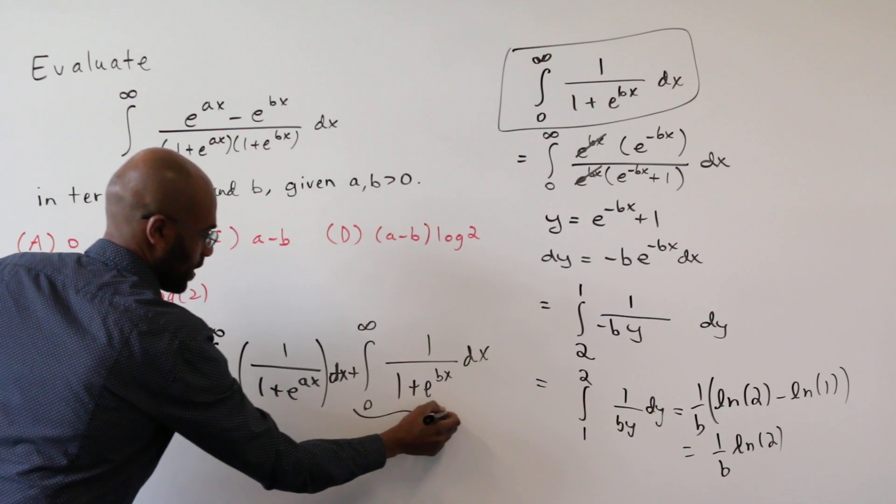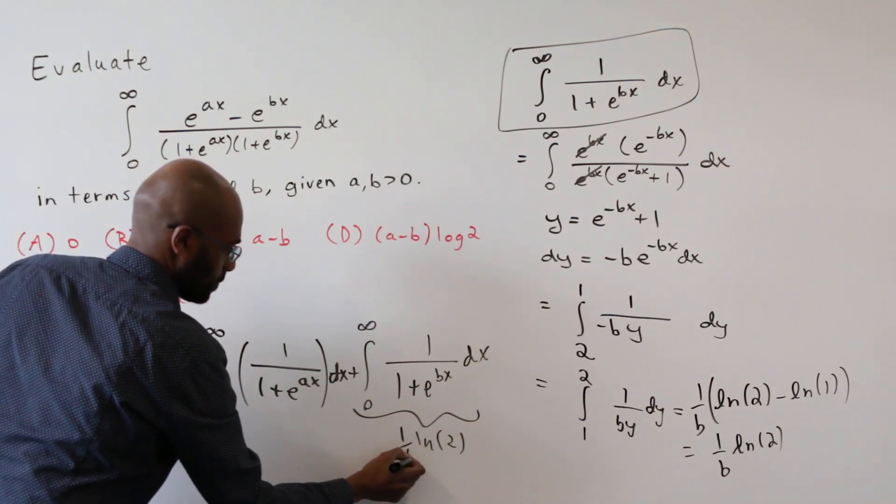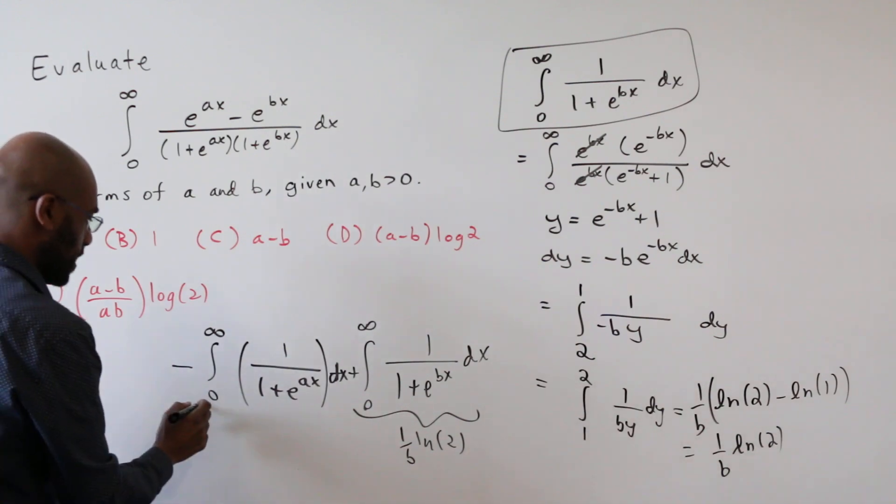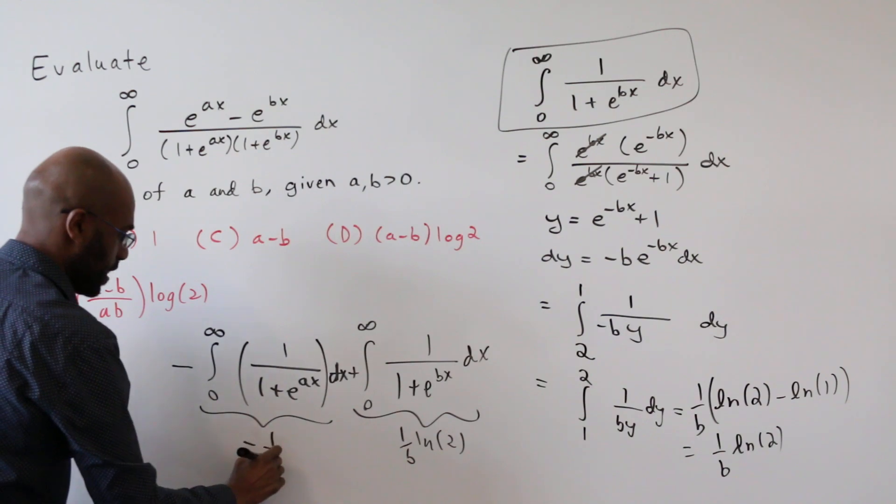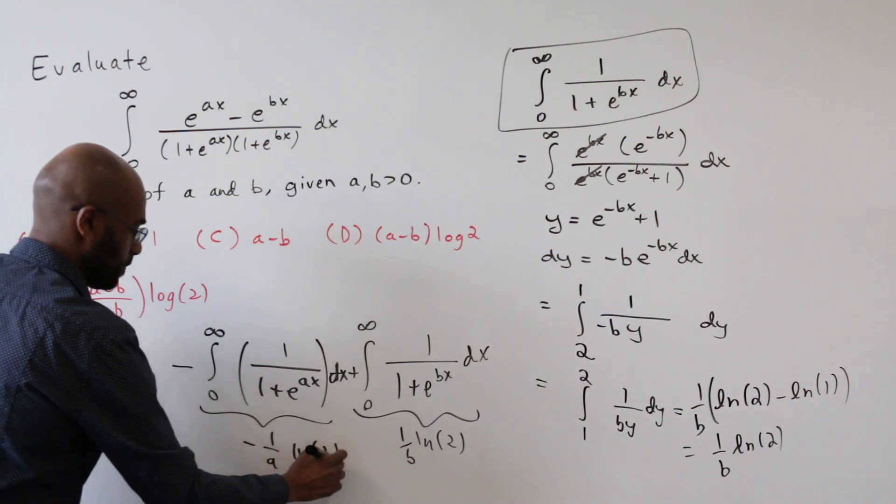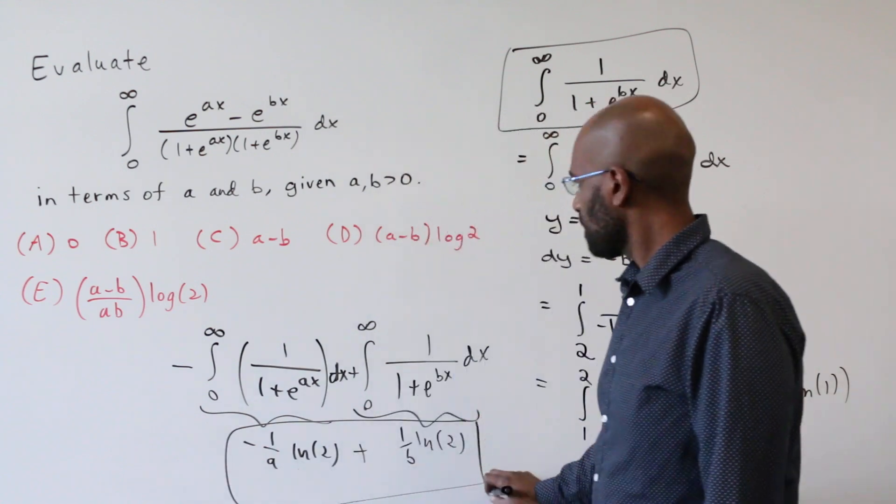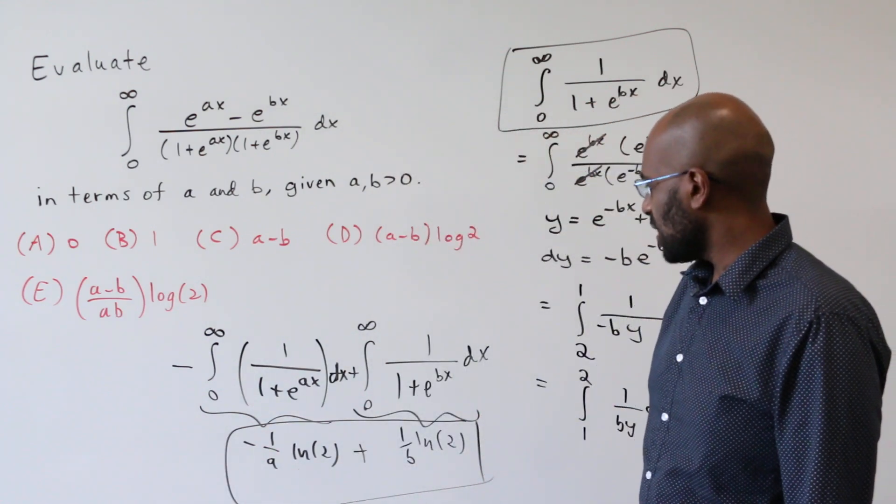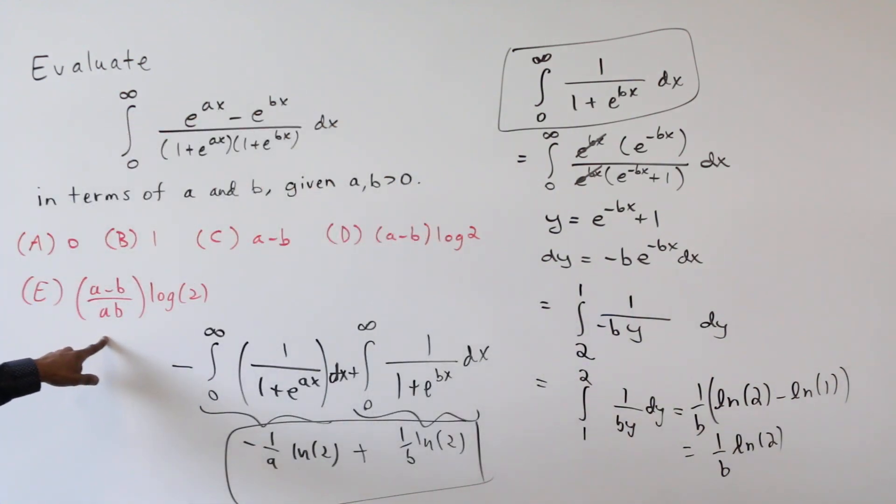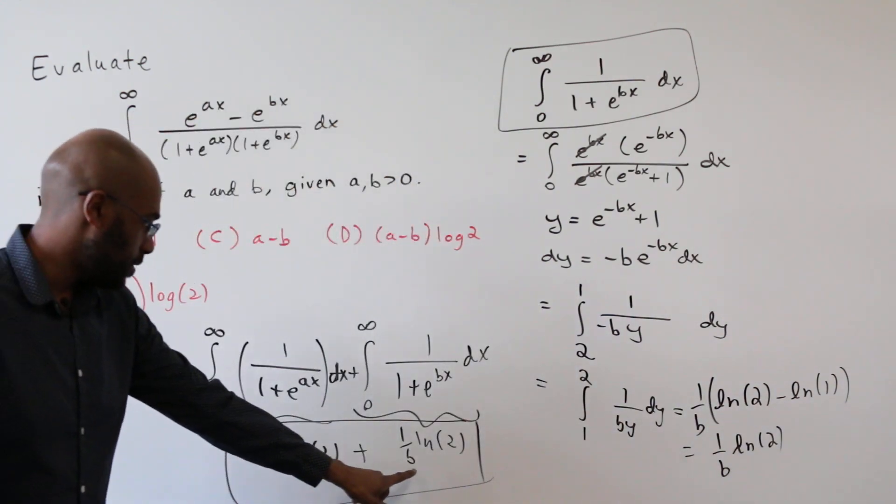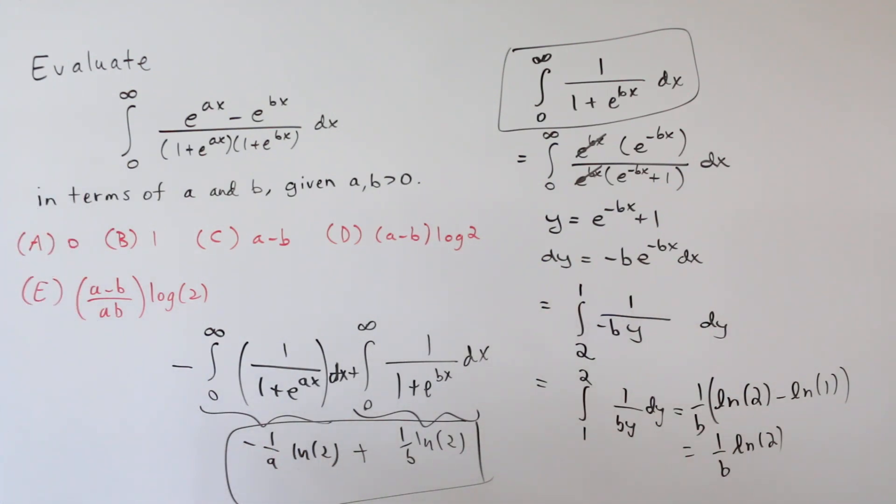That means this, so I'll write that here. One over b ln of two. And here, we'll get the same thing with b replaced with a and a negative. So negative one over a ln of two. And so our integral is the sum of these two things. And the only one that looks like it's a candidate for something like this is this last one, e. And that actually does work out if we add these two fractions. Right, this is one over b minus one over a.